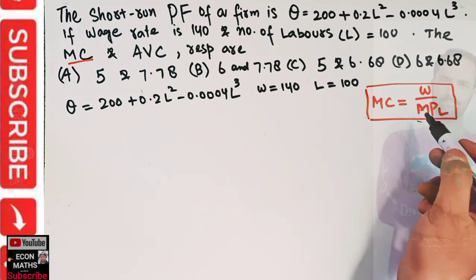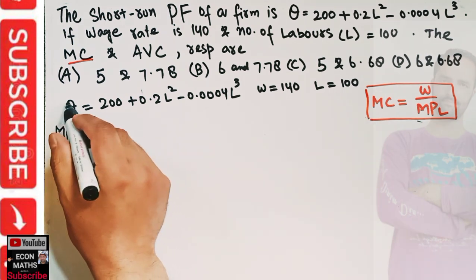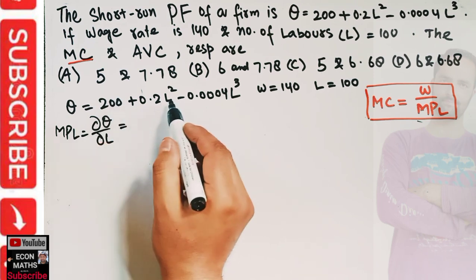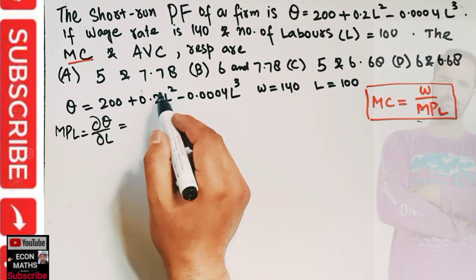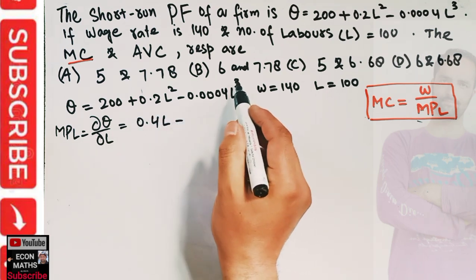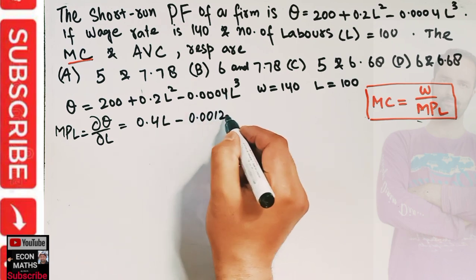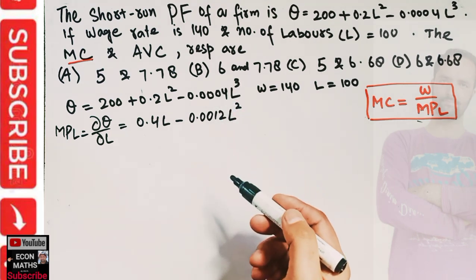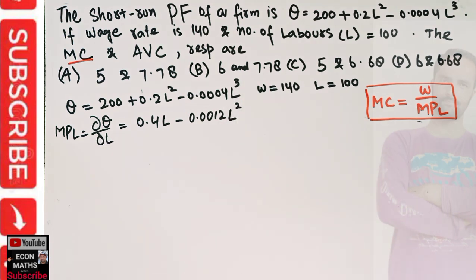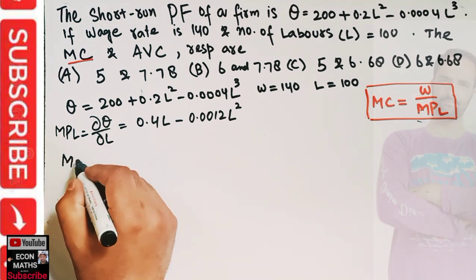First, we need to find the marginal product of labor. The marginal product of labor is simply the partial derivative of the production function with respect to L. The derivative of L² is 2, so 2 × 0.2 = 0.4L. Similarly, 3 × 0.0004 = 0.0012, giving us 0.0012L². By the power rule, the exponent becomes the coefficient and the exponent is reduced by 1. This gives our marginal product of labor.